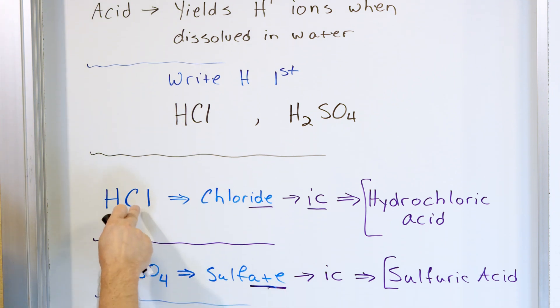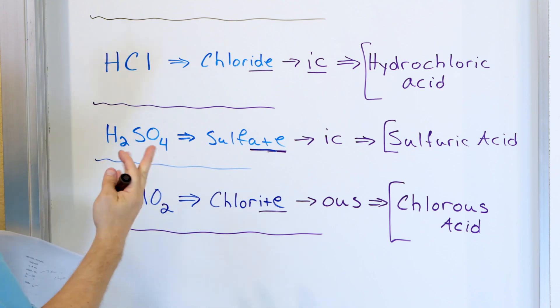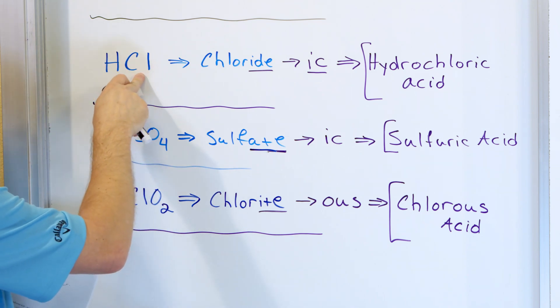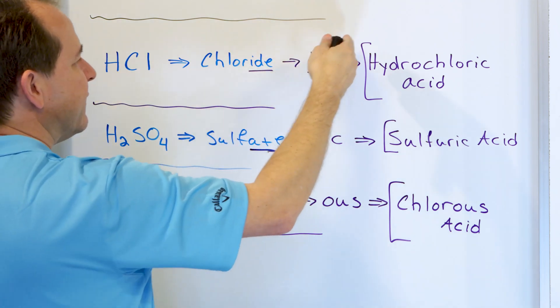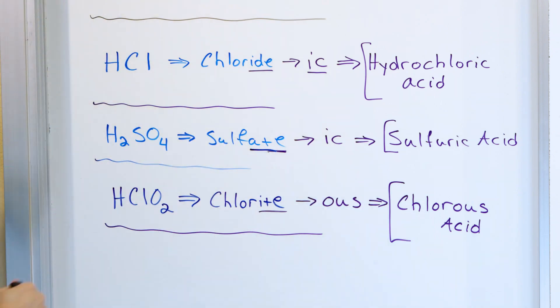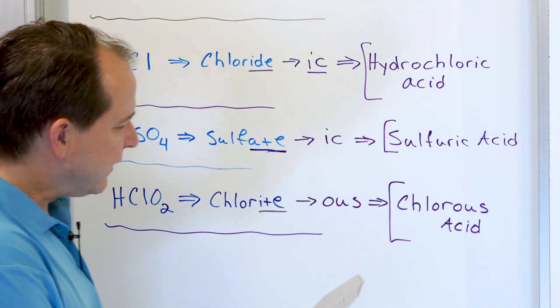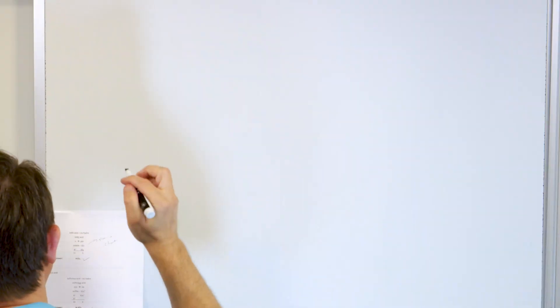And they are named according to whatever the negative ion is. If the negative ion is just an element like chloride, it's named like hydrochloric acid, and we did the other cases down here. So let's take a look and name the following acids.